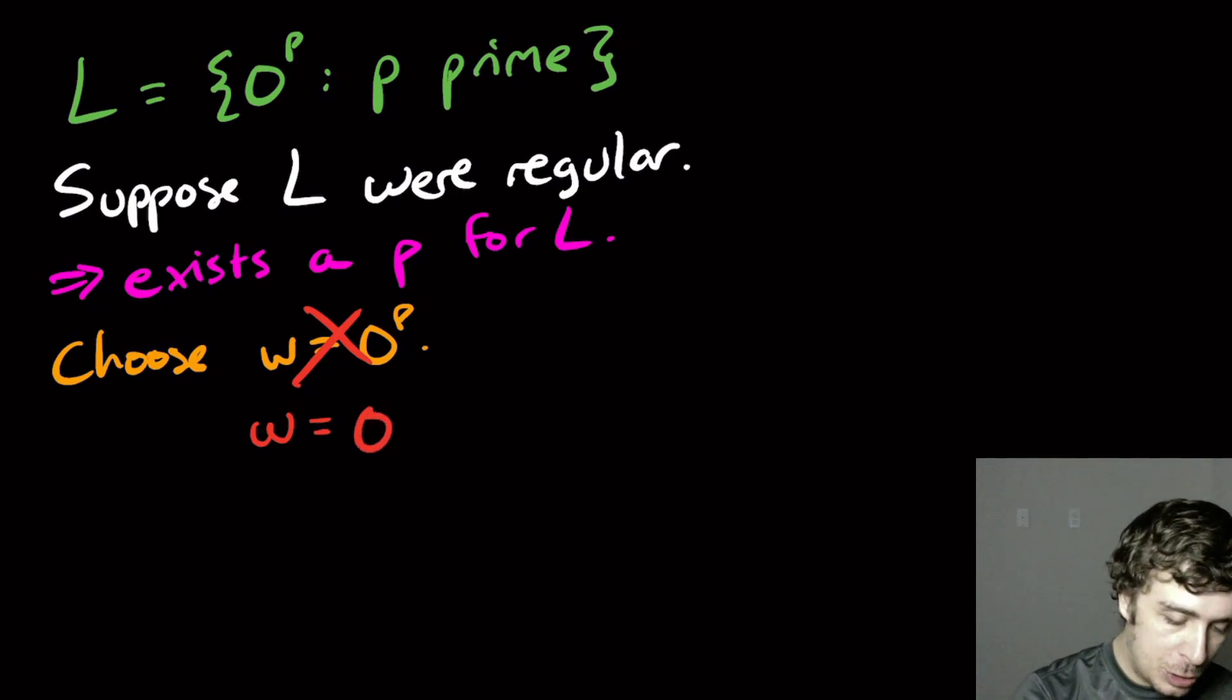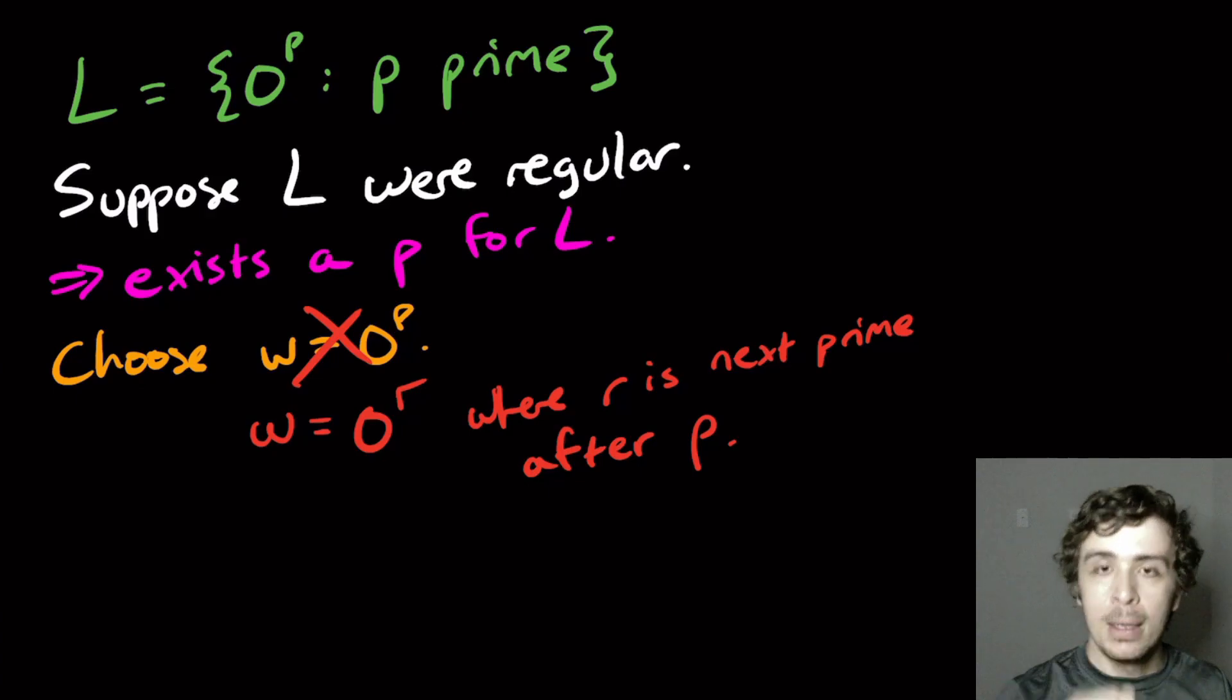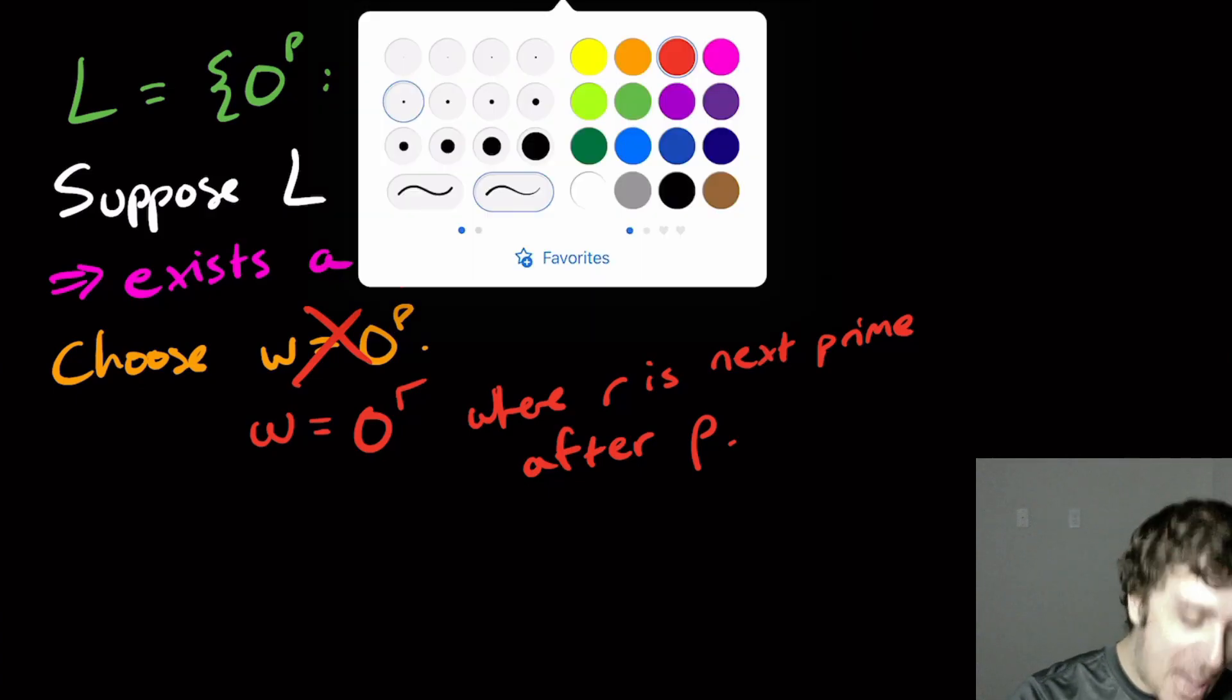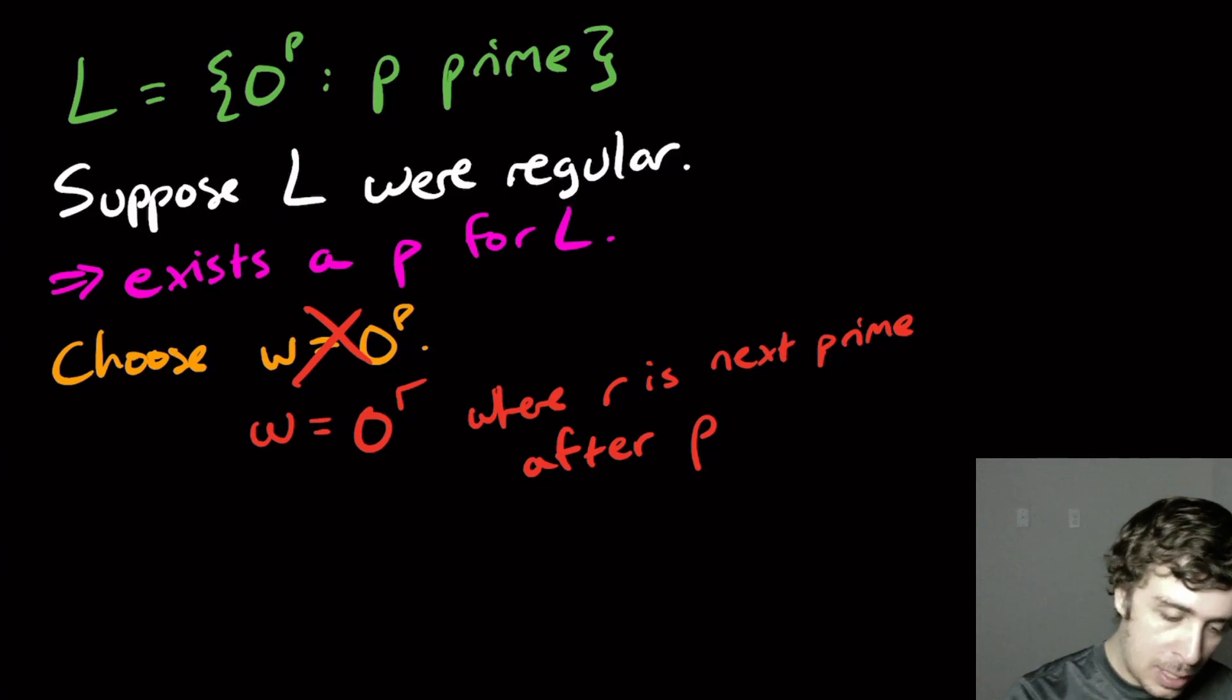I'm going to pick zero to the R where R is the next prime after P. Okay, I'm actually not going to do that either. So I'm going to actually do after P plus two.